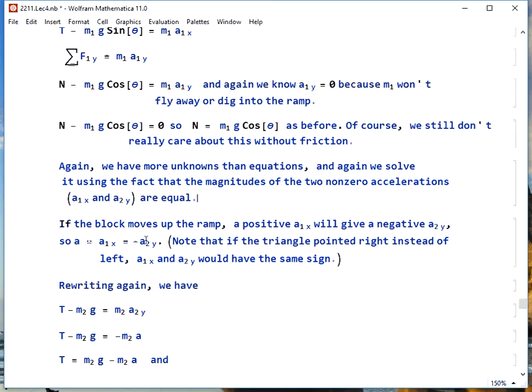Yet again, we have more unknowns than equations, and we solve that problem again by realizing that a1x and a2y have the same magnitudes. If the block moves up the ramp, we have positive a1x gives us negative a2y, so we can make this same choice again, a equals a1x equals negative a2y.